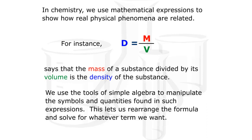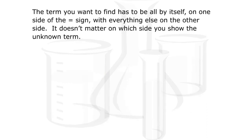We use the tools of simple algebra to manipulate the symbols and quantities found in such expressions. This lets us rearrange the formula and solve for whatever term we want. The term you want to find has to be all by itself on one side of the equal sign, with everything else on the other side. It doesn't matter on which side you show the unknown term.